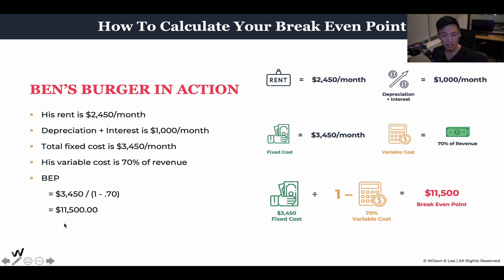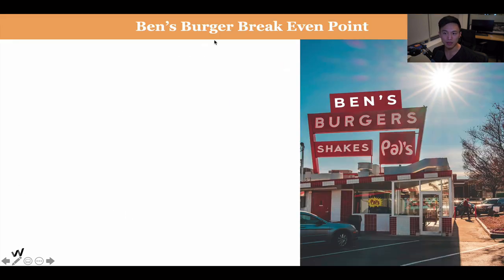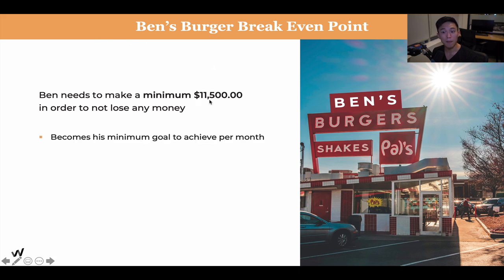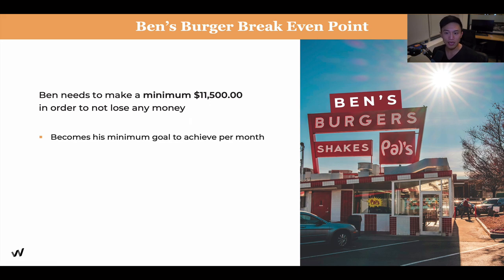This means that Ben needs to make a minimum of $11,500 per month in order not to lose any money and to pay for all his fixed expenses. This becomes his minimum goal to achieve every single month. So if he's at $9,500, he knows he needs to make another $2,000 to break even — and he can do that by upselling, pushing for an extra drink or extra fries.